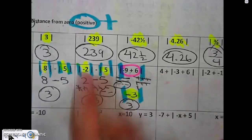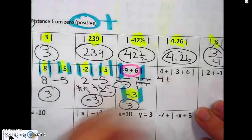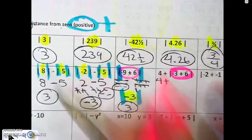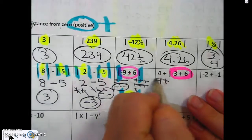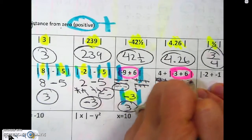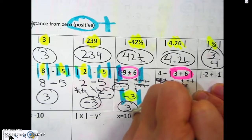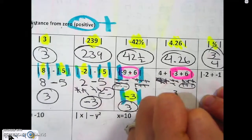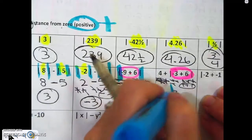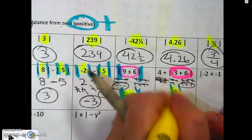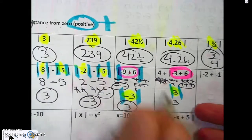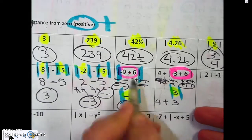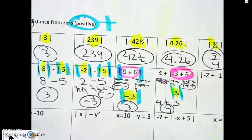Let's go to the next one. This one's fine the way it is outside. But I have to take care of what's inside first: negative three plus six. I'll ignore the four for a while. Counting: one, two, three negatives and one, two, three positives — boom, positive three. So that's positive three in the bars — make it positive. Now bring down the plus, bring down the four. Four plus three is seven.